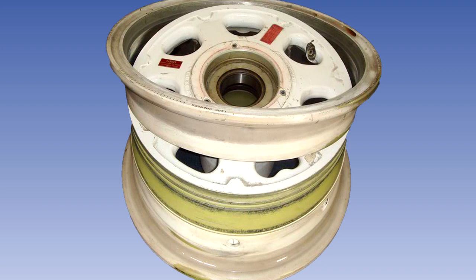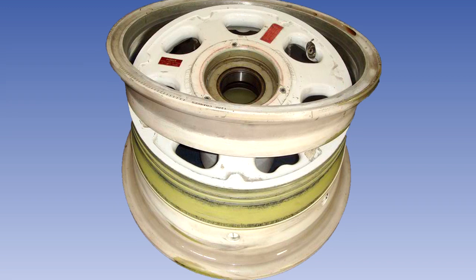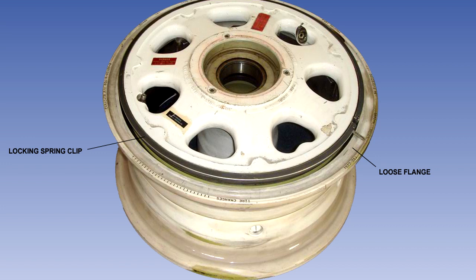Both the loose and detachable flange types of wheel are made with one flange integral with the wheel body and the other a separate removable part which is machined to fit over the wheel rim. The difference between the loose and detachable flange types is the method by which the removable flange is secured. In the loose flange type, the flange is retained by a locking device on the wheel rim and held in place by the tyre pressure.